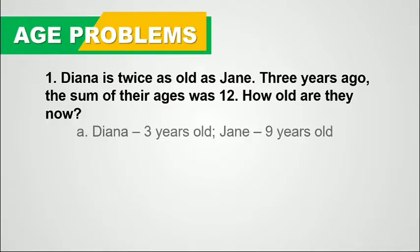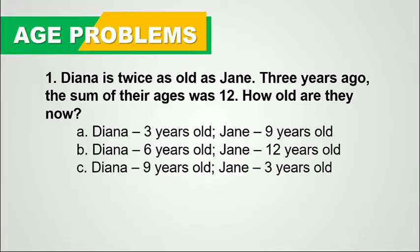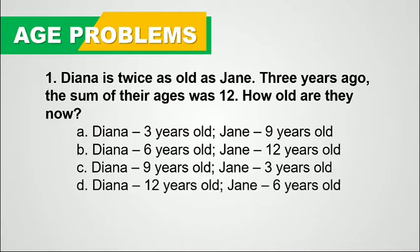Is it letter A — Diana is 3 years old while Jane is 9 years old? Or letter B — Diana is 6 years old while Jane is 12 years old? Or letter C — Diana is 9 years old while Jane is 3 years old? Or letter D — Diana is 12 years old while Jane is 6 years old?